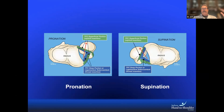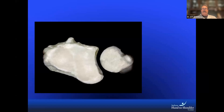In pronation, the volar portion of the deep ligament is under tension and the superficial portion of the dorsal ligament is under tension. When we go into supination, that arrangement changes — now the deep portion of the superficial ligament is under tension and the superficial portion of the volar ligament is under tension. That reciprocal tensioning and loosening of these ligaments is how we control motion and stability.